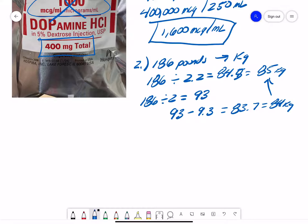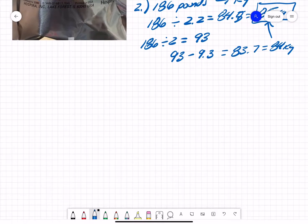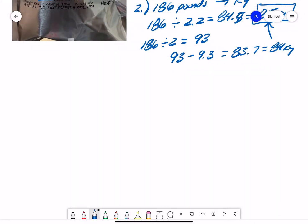But for the remainder of this problem, we would just look at the 85 kilos. So now we have to take all of the information that we've gathered so far, the drug dose order, 7 micrograms times the weight in kilos, which we just figured out.